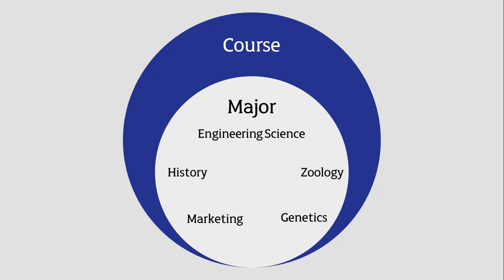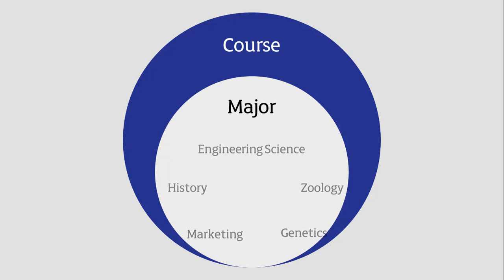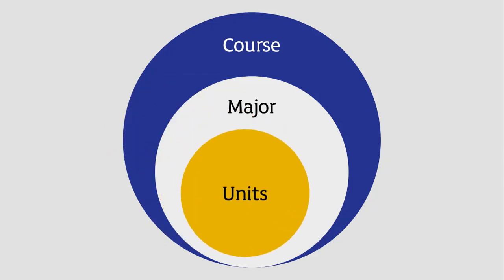Each major is made up of a structured sequence of units. A unit is a subject or topic of focus that you enroll in. Units are the building blocks of your degree. They are normally worth six credit points and last one semester. Please note, there are two semesters in one academic year. A standard full-time enrollment load is four units per semester, or eight units per year.